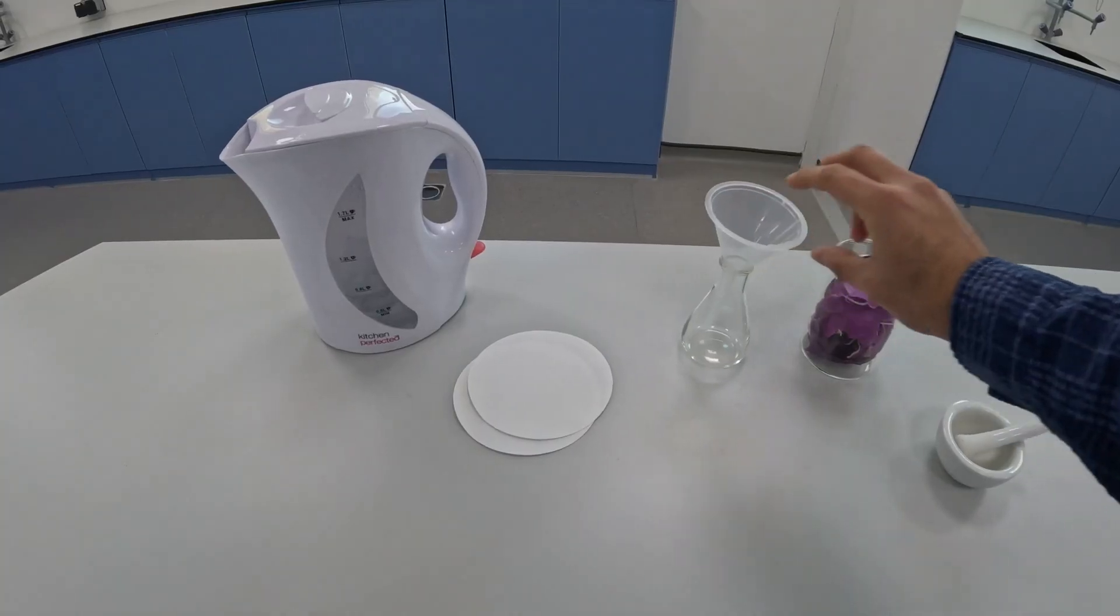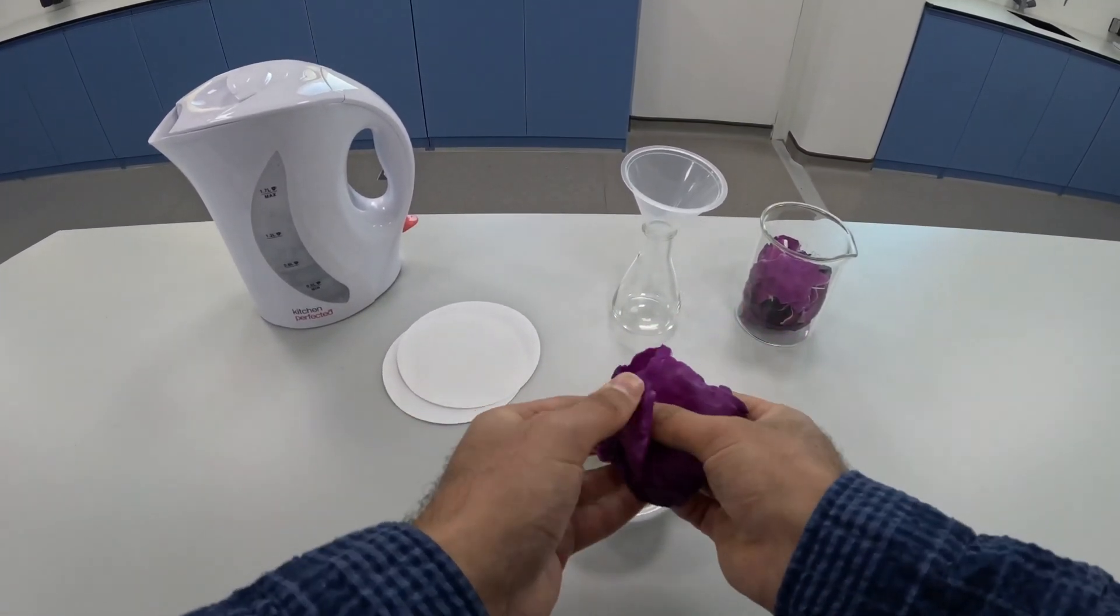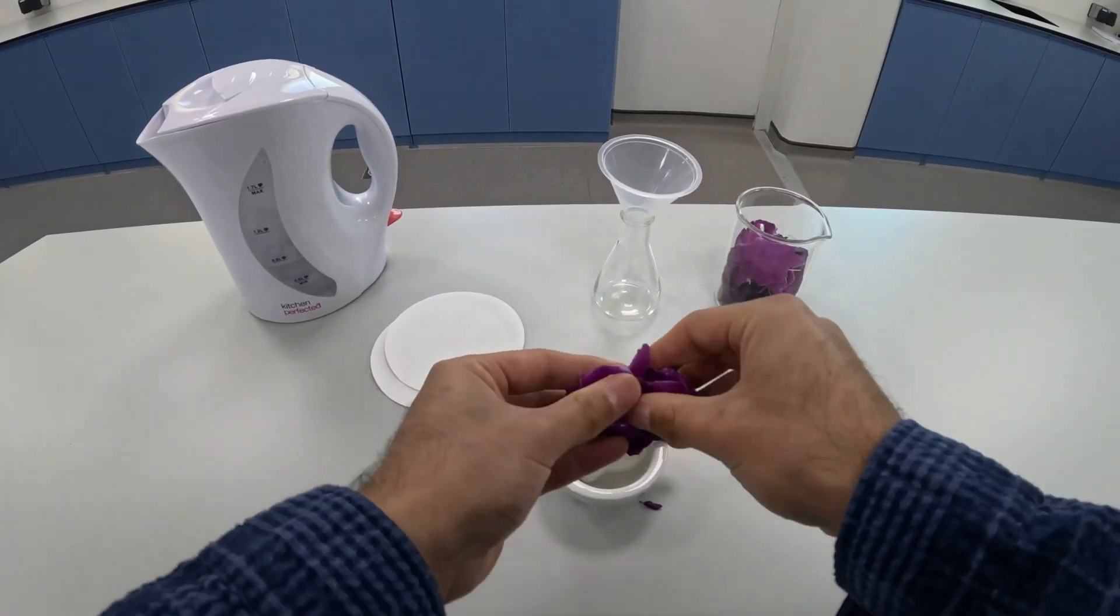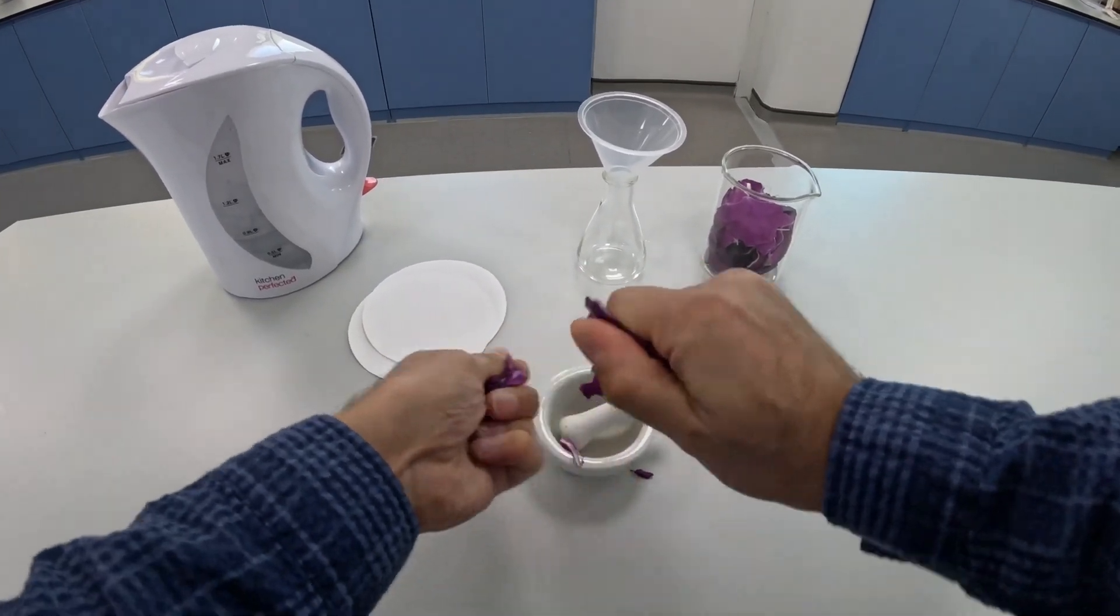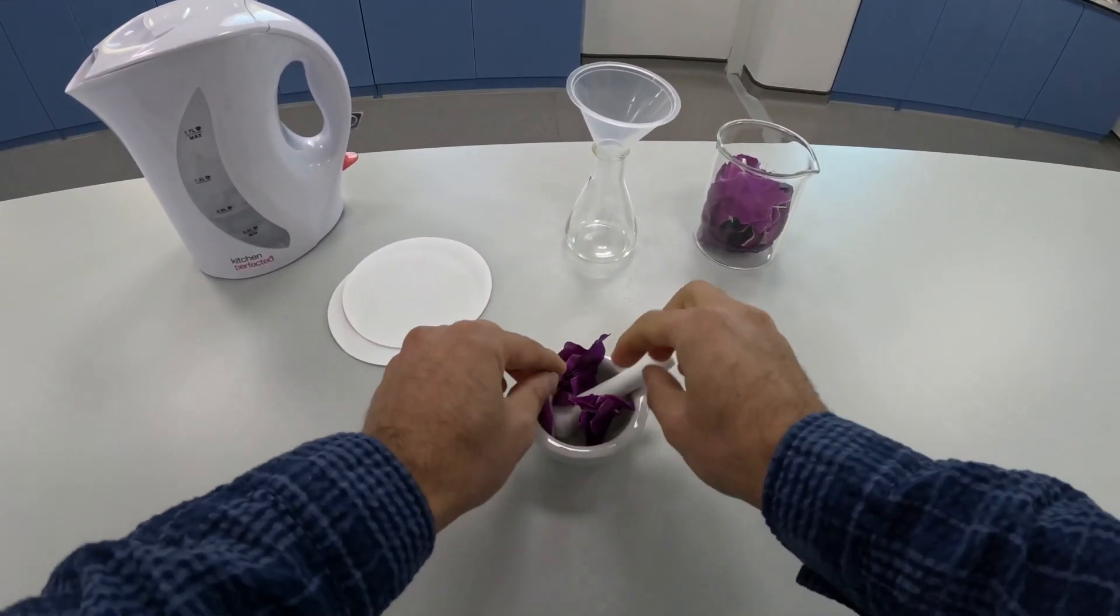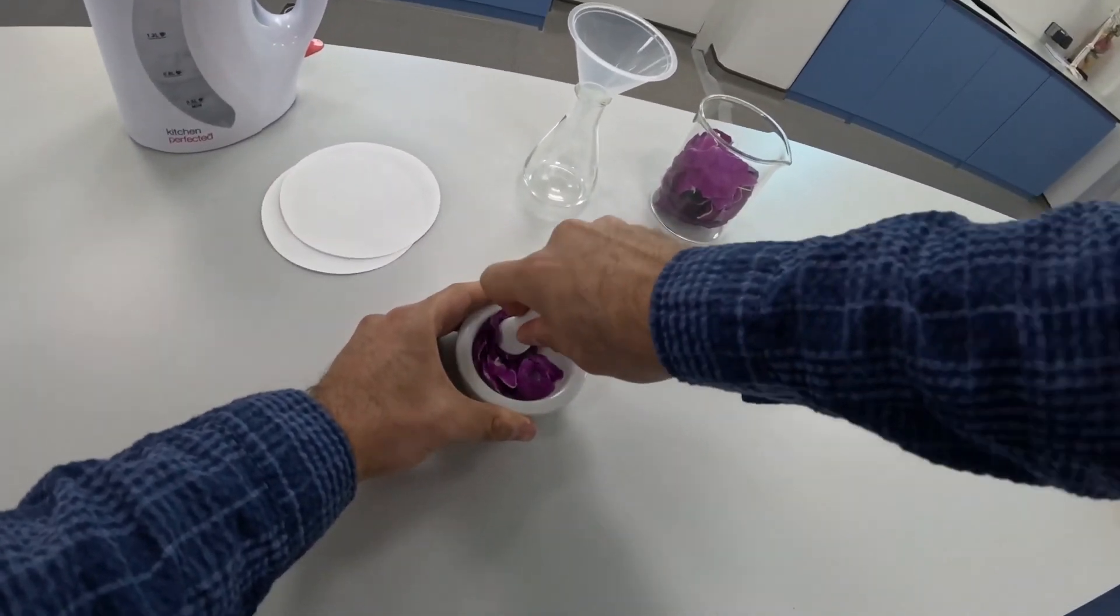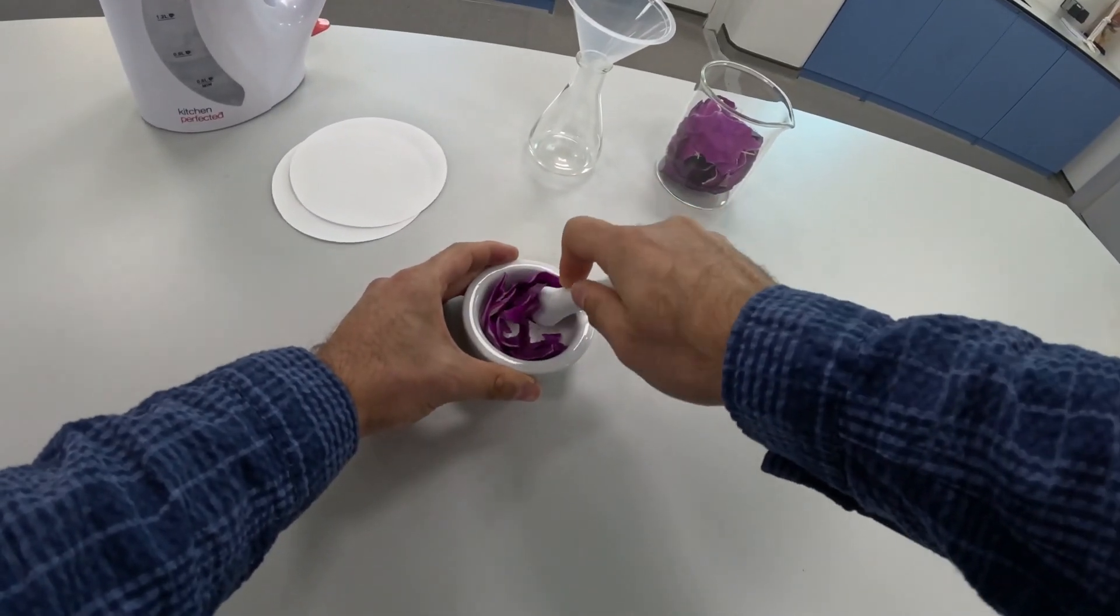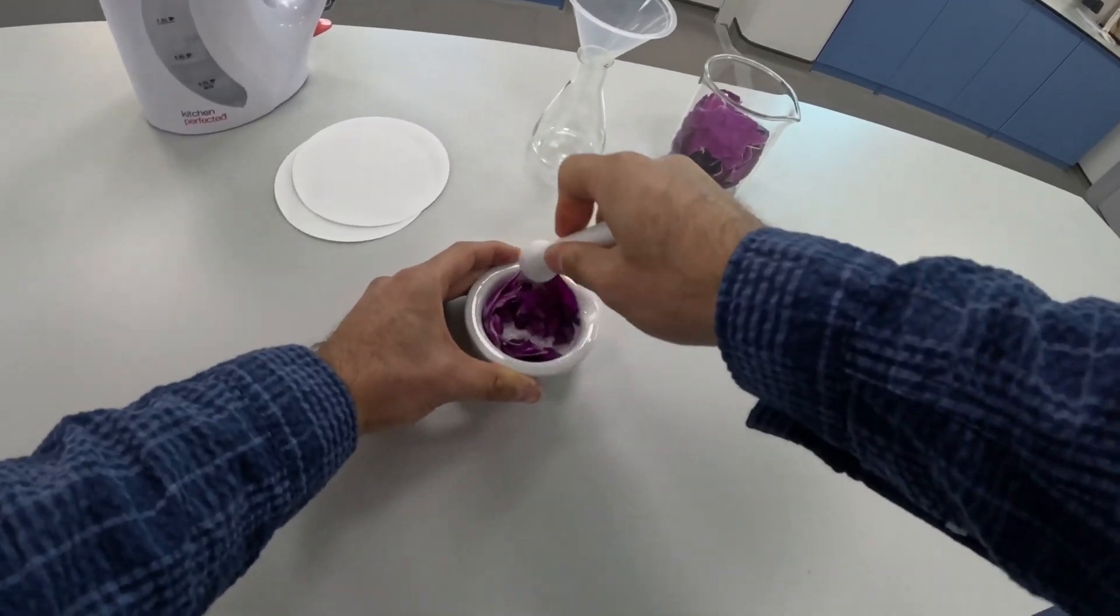So we're going to first start by putting some red cabbage in small pieces into our pestle and mortar and then we're going to crush it up as much as we can over about 10 minutes. You really want to crush this really well so all of the colorful pigments can come out of the cells of the red cabbage.